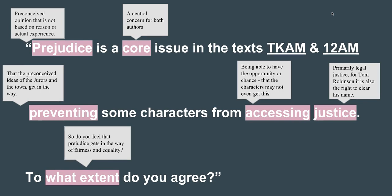Prejudice is a preconceived opinion that is not based on actual reason or experience. The prejudice that the society of Maycomb holds against African American people such as Tom Robinson is not based on a good reason or experience — just as the prejudice that juror seven holds against the accused and people like them who live in slums is not based on any kind of experience. It's just an idea that they have. Prejudice is a core issue — the word core means it's important — and the preconceived ideas of the jurors and the townspeople get in the way of justice, preventing some characters from even having the opportunity to access it.